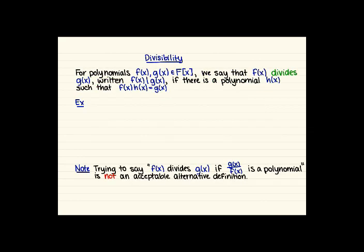The first thing we need to talk about for this is divisibility. Similar to how we define an integer dividing another integer, we define a polynomial in F adjoin x dividing another polynomial in F adjoin x. If we have polynomials f(x) and g(x) in our polynomial ring F adjoin x, where F is a field, we say that f(x) divides g(x) — written with a vertical bar — if there's a polynomial h(x) such that f(x) times h(x) equals g(x).